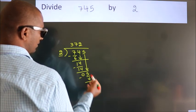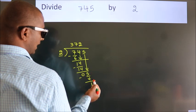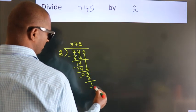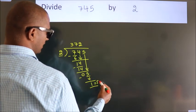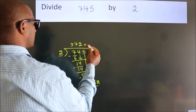After this, no more numbers to bring down. So we stop here. This is our remainder. This is our quotient.